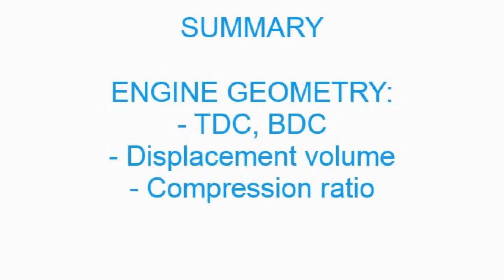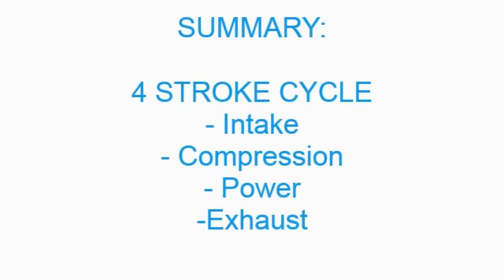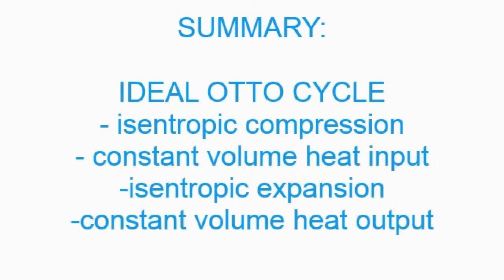So in summary in this video, we went over engine geometry, top dead center, bottom dead center. We looked at the four stroke cycle, intake, compression, power, exhaust. Then we looked at the ideal Otto cycle, which consists of compression, constant volume heat.